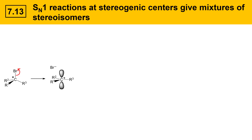This carbocation is flat in the vicinity of the carbocation. There's an upper face, which has half of a P-lobe here, and there's a lower face, which has the other half of the P-lobe here. These two faces are what is going to be accessible to the nucleophile, so when a nucleophile attacks the carbocation, it has two options: it can either attack the top face or the bottom face.